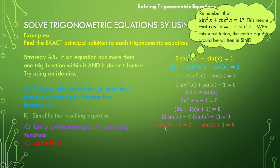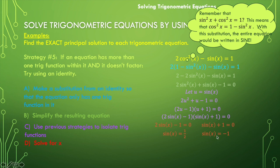Now we think about where these equations are true on the unit circle. Where is the sine of x equal to one half? Which angles have a y coordinate of one half? You'll find those on the top half of the unit circle at pi over six and five pi over six. And sine of x is equal to negative one — that's directly on the y-axis straight down at three pi over two. Those three angle measures are our solution set for this equation.